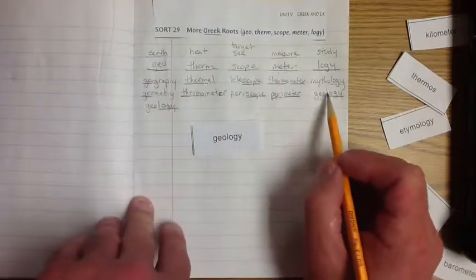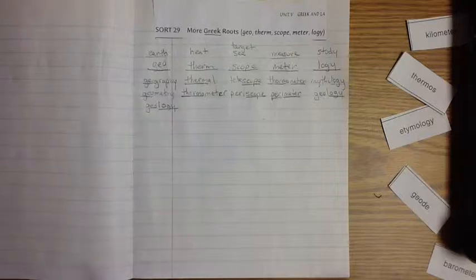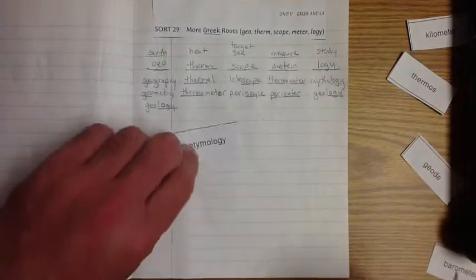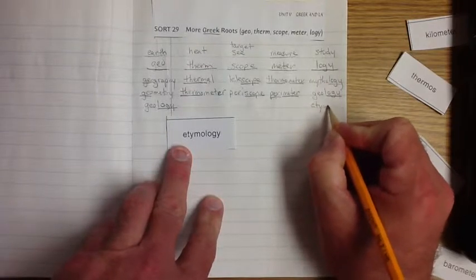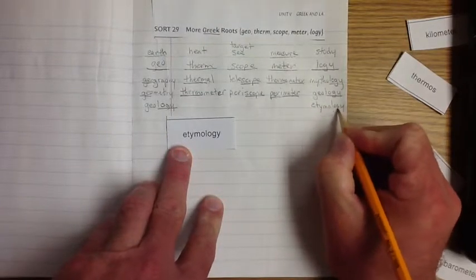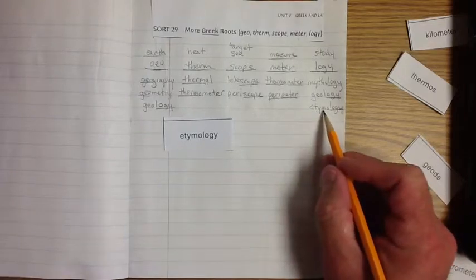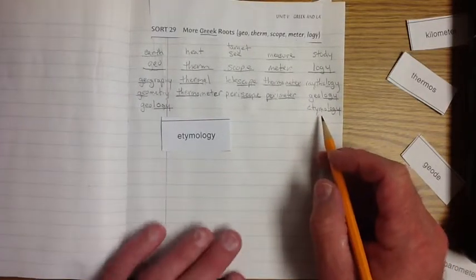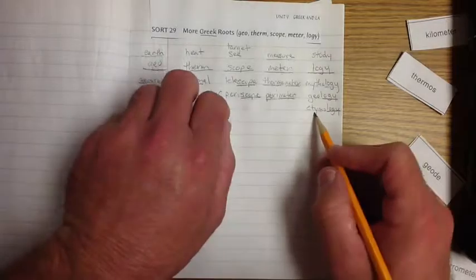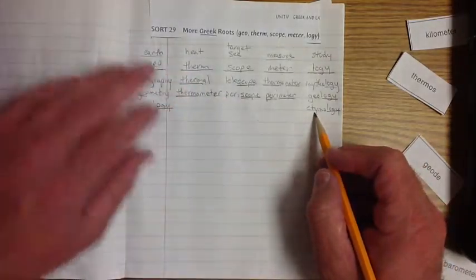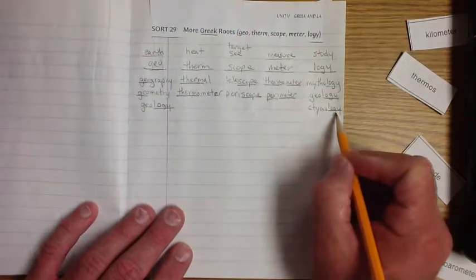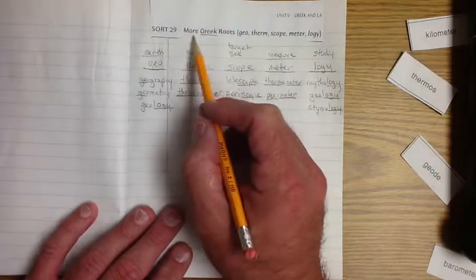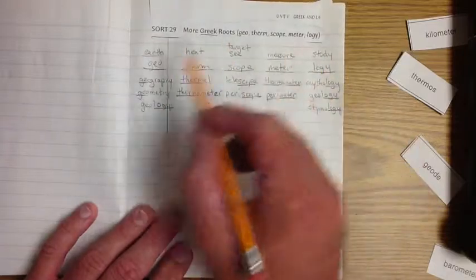I want to show you one more logy that I think is really cool. Etymology. E-T-Y-M-O-L-O-G-Y. Etym is words. The study of words. Exactly. And where they came from. And this is kind of what we're doing, is we're becoming etymologists because we are studying words in spelling. And that's what I want you guys to know, is I want you to realize that that's what we're doing, we're studying words.